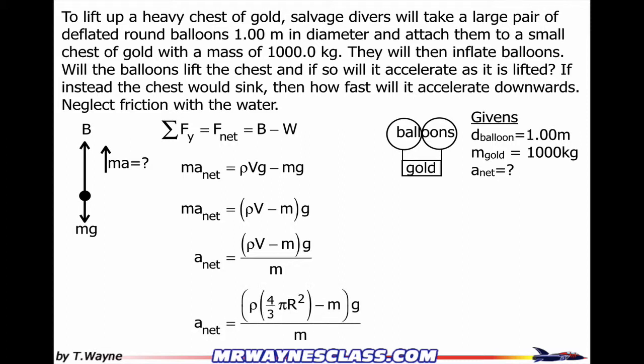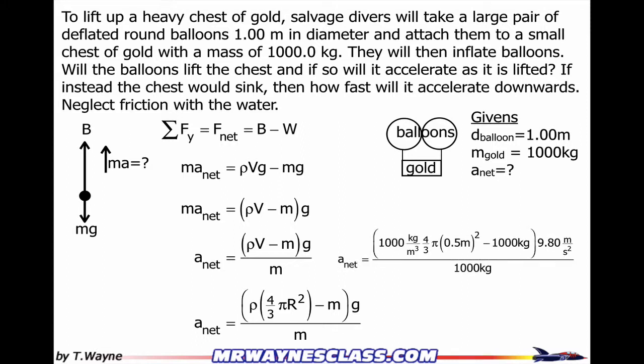The acceleration equals four-thirds π r³ minus the mass, times g, divided by the mass. With my unknown isolated, I plug in the numbers and units and get a positive acceleration of 4.92 meters per second squared. So yes, the balloons will lift the chest — in fact, it will accelerate upwards at 0.492 meters per second squared.